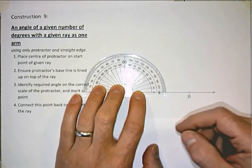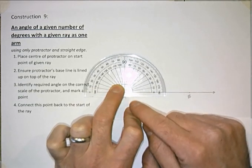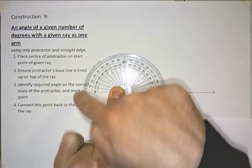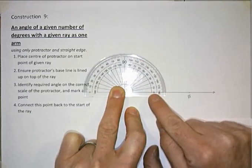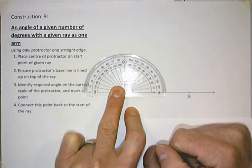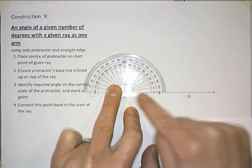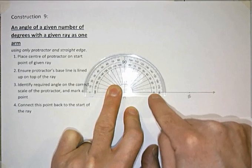Now the key thing here in terms of measuring our angle is we start from where 0 is on the scale. Now there's 0 here on the outside scale or we have 0 here on the inside scale. So what we want to use is the inside scale in this instance because my given ray goes through this 0 here.